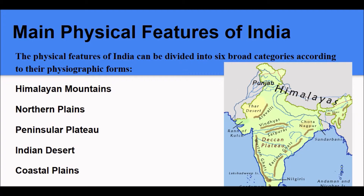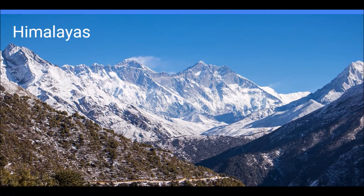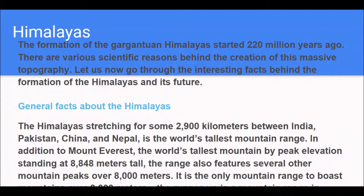The Himalayas, completely snow-covered, over 8,000 meters above sea level. The formation of the gargantuan Himalayas started around 220 million years ago. The Himalayas stretch for 2,900 kilometers between India, Pakistan, China and Nepal. It is the world's tallest mountain range. In addition to Mount Everest, the world's tallest mountain by peak elevation standing at 8,848 meters tall, the range also features several other mountain peaks over 8,000 meters.